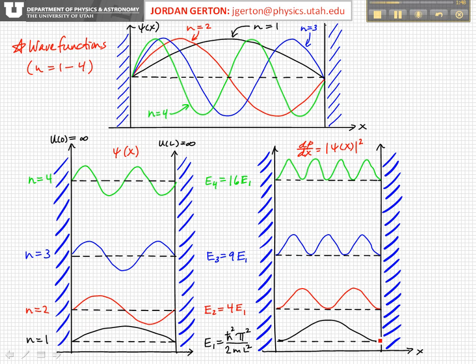Now, keep in mind that the classical prediction was that the probability for finding the particle in the box was uniform. That is, it would be a straight line on such a graph, and so this quantum prediction is radically different from the classical prediction. Nevertheless, they have to agree in some limit, as we'll discuss in a second.